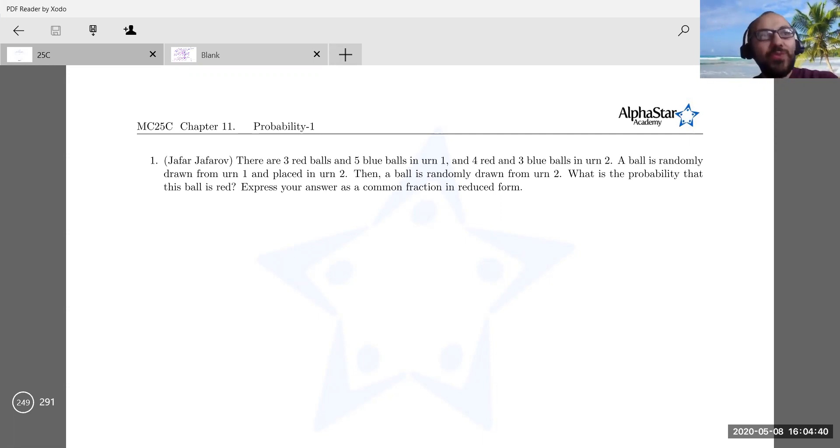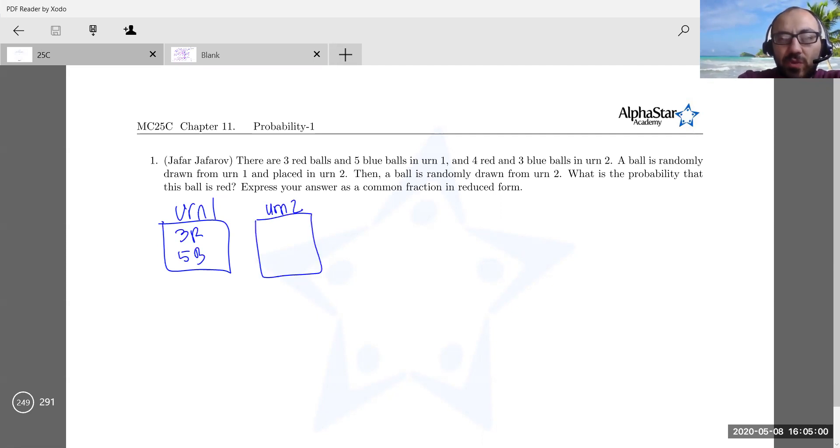Good try Ayush for the earlier problem, we are very close. I'll set it up in the meantime. Three red, five blue here, and four red, three blue here. We are picking one ball randomly from the first urn and put it in a second urn, and then pick a random ball from there. What is the probability it is gonna be red? Good, good Aish.